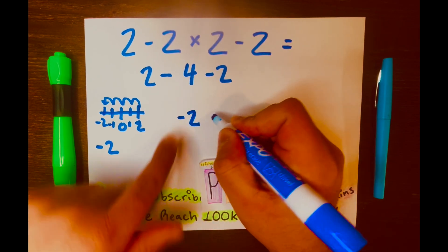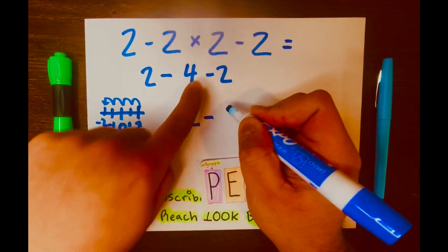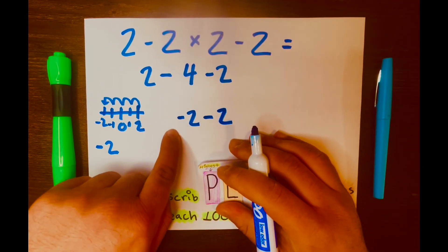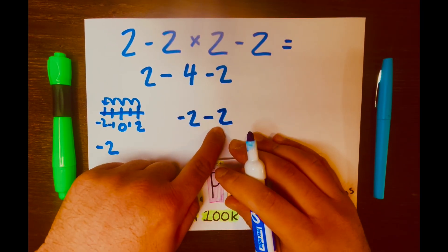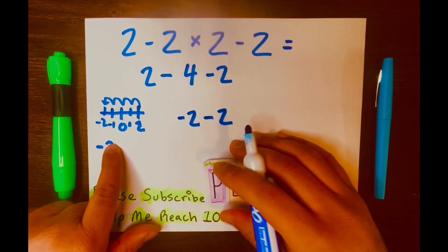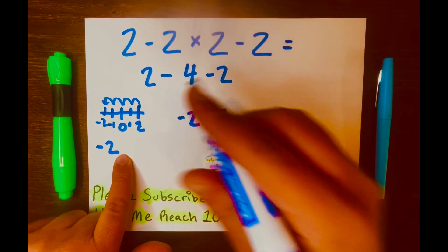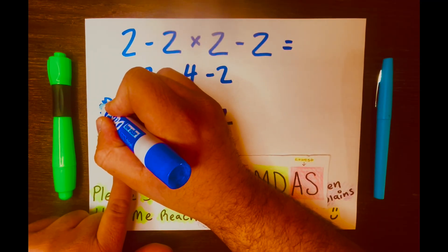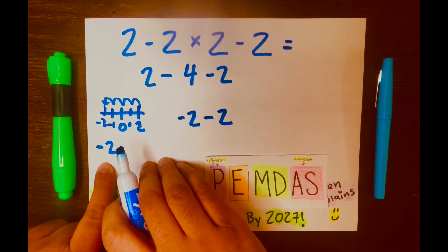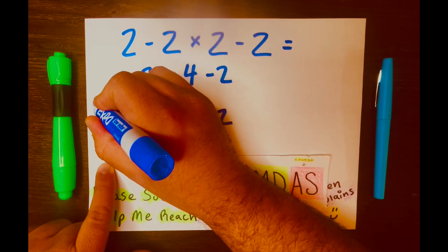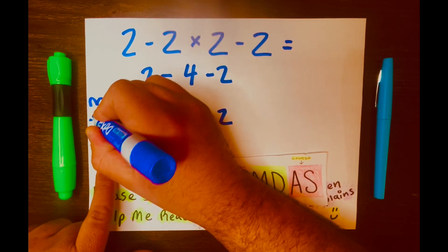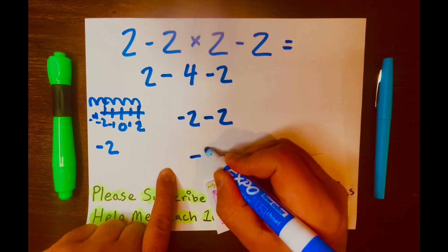So I'll write it here, negative 2, and then bring down the subtraction symbol and the 2. Now we have negative 2 minus 2. And again, you can use the number line. Just go back 2 units to the left, so you'll land at negative 4, which is the answer. So your answer will be negative 4.